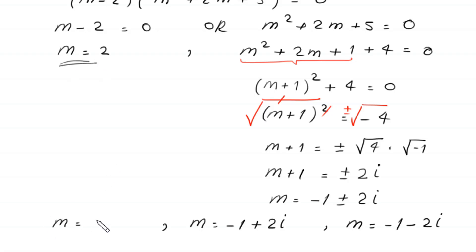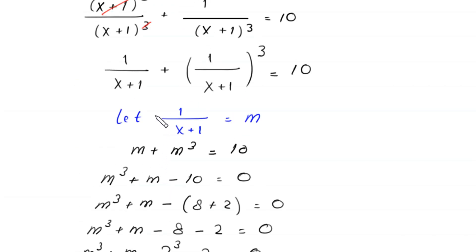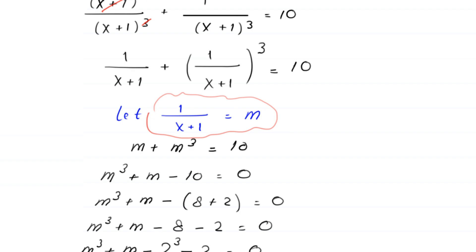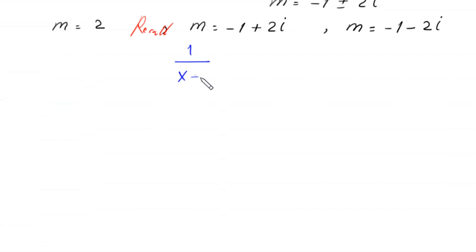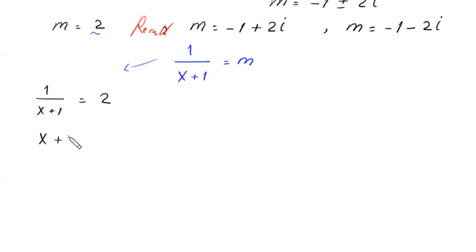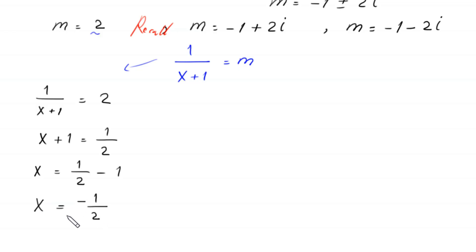Recalling that 1 over (x+1) equals m: when m equals 2, this equation becomes 1 over (x+1) equals 2. Taking the reciprocal of both sides gives x plus 1 equals 1 over 2, and subtracting 1 from both sides gives x equals 1 over 2 minus 1. This is the first solution x₁ equals negative 1 over 2.